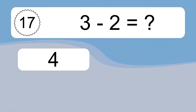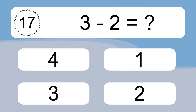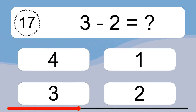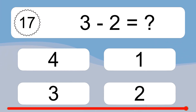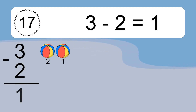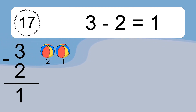3 minus 2 equals what? 3 minus 2 equals 1. Let's count it: 5, 4, 3, 2, 1.